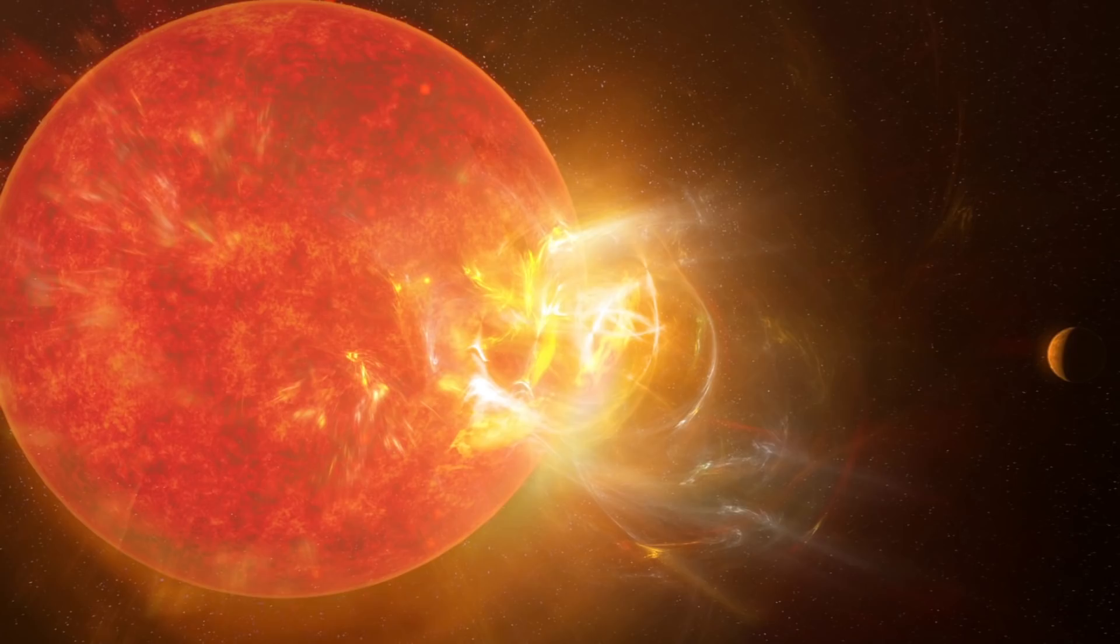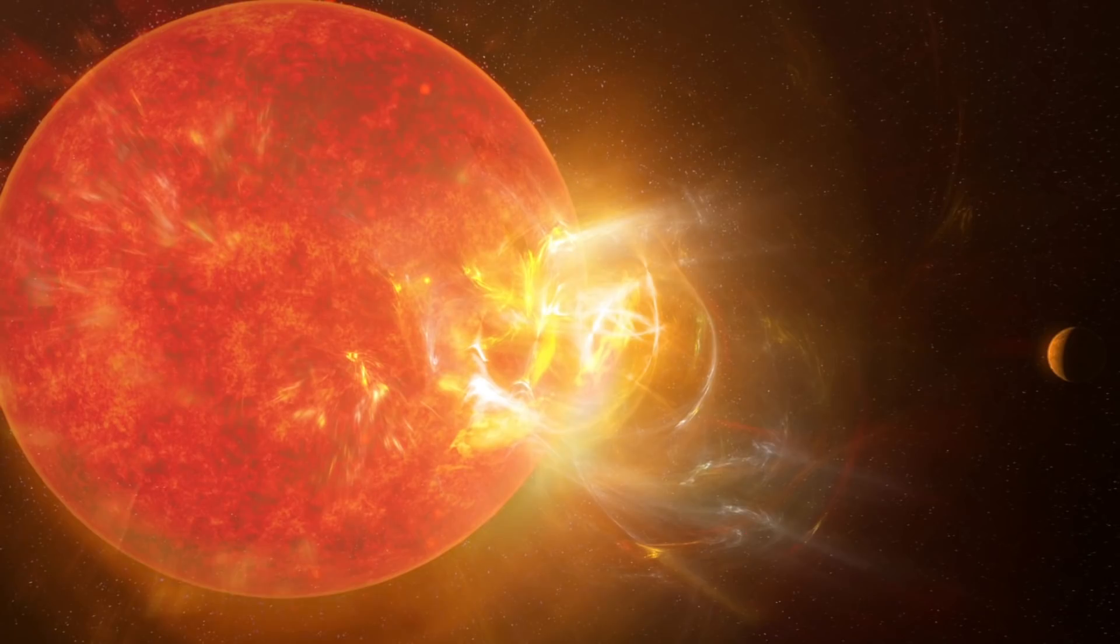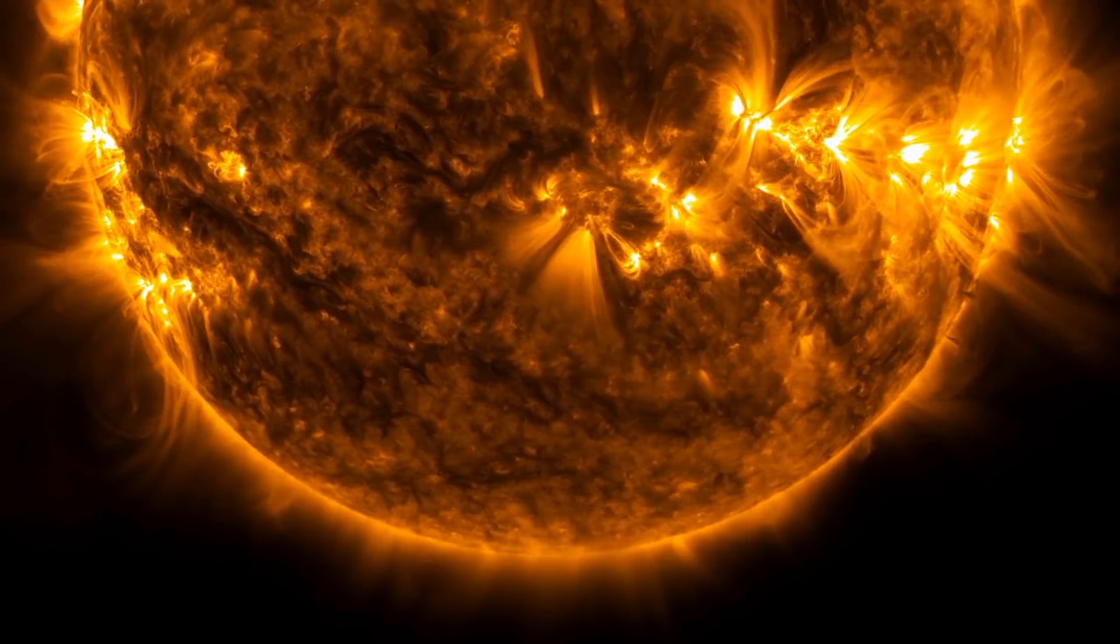In contrast our neighbor Proxima Centauri, the nearest star to us, is what you would call a flare star. It produces an extremely large amount of very powerful flares, many of which would hypothetically strip the atmosphere of the planet in just a few million years. Especially since many of the planets around a typical flare star or a red dwarf would be way closer to the star compared to a typical g-type star such as our sun.